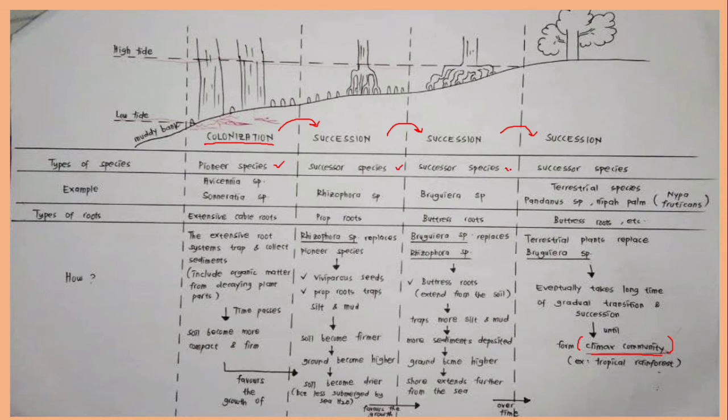So we start for the mangrove ecosystem colonization. The pioneer species have specialized extensive cable root. Here is the example. Extensive cable roots are the roots yang ada grounds, yang macam extension, panjang-panjang dan boleh sambung-sambung to provide support.